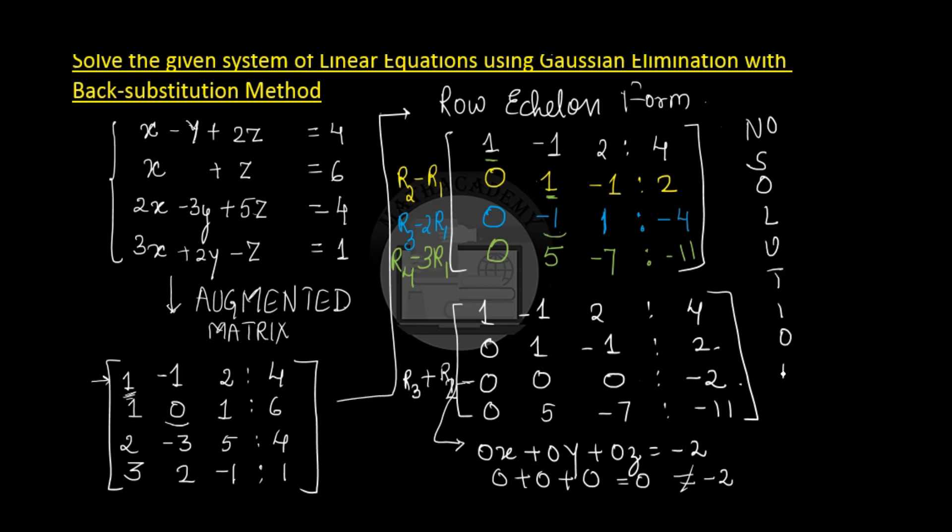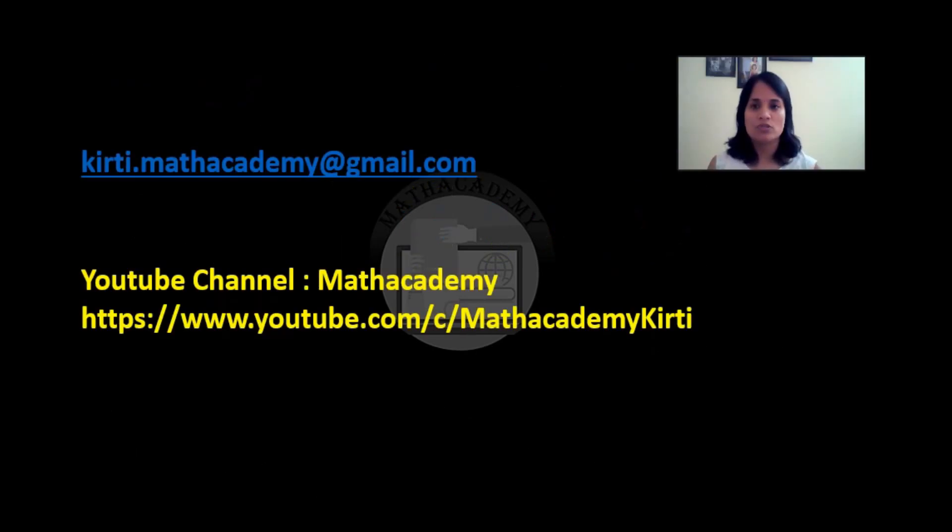So if we try to convert the augmented matrix to the row echelon form and we get a row in which the coefficients of the variables are 0 with a constant term, then that particular set of equations has no solution. I hope how to determine the given equation has no solution using Gaussian elimination is clear to everyone.